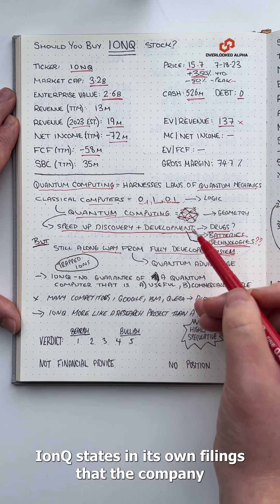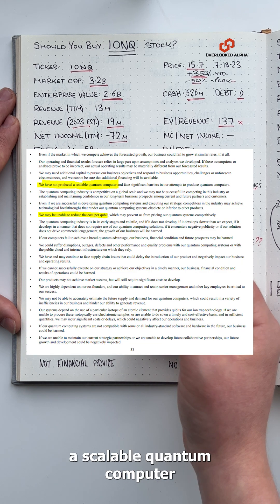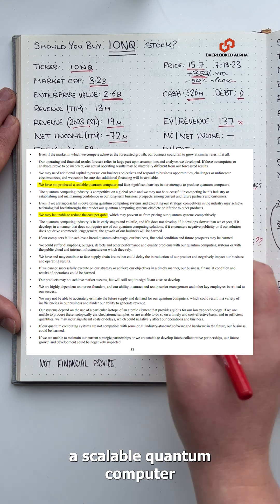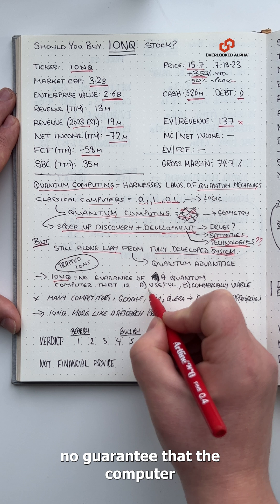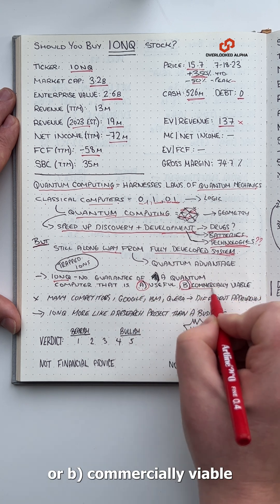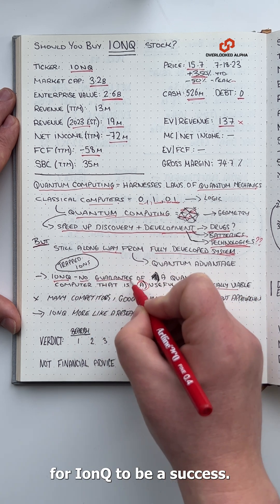IonQ states in its own filings that the company has not yet produced a scalable quantum computer. And even if it's able to do so, there's no guarantee that the computer will be useful or commercially viable.